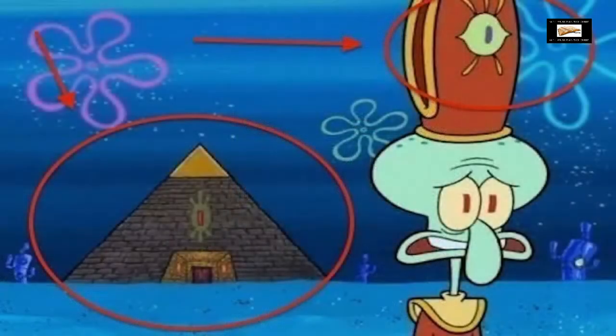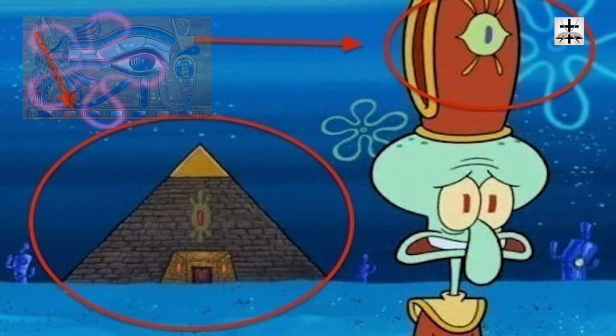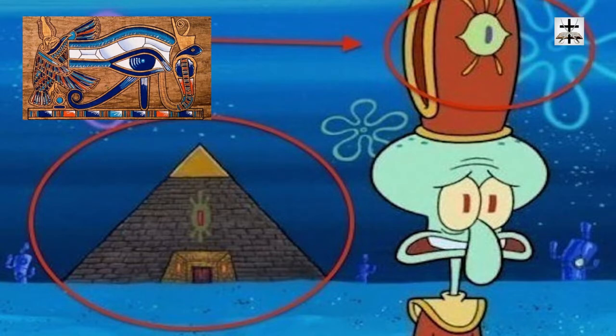Here's the next example — I showed this in my SpongeBob video — where Squidward is essentially joining a freemasonic illuminati lodge. He's got the illuminati Eye of Horus on his hat and the illuminati pyramid with the Eye of Horus right in the background — the all-seeing Eye of Horus of Egyptian mythology — right there, open for everyone to see. When you're a kid you think it's just a cute, fun little cartoon.